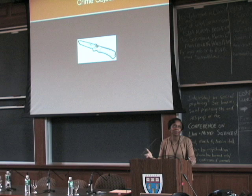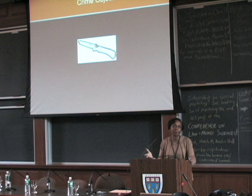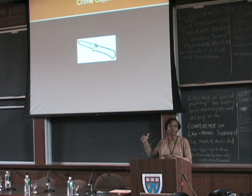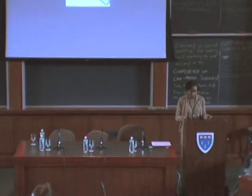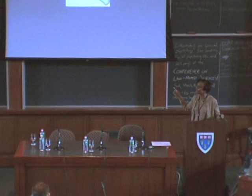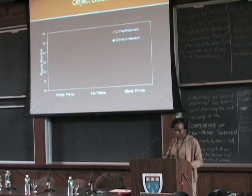Some of these objects were crime-relevant like guns and knives, and others were crime-irrelevant like staplers and cameras. The participants were either exposed to black male faces, white male faces, or no faces at all, and then all of them did this object detection task on both the crime-relevant and the crime-irrelevant objects. We hypothesized that participants who were exposed to the black male faces initially would need less time to detect the crime-relevant objects.